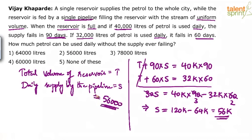If daily consumption is 56,000 liters it will never fail. Even if you assume the reservoir is full, 56,000 liters is what can always be consumed because the pipe can supply exactly that. So the answer is 56,000 liters per day.